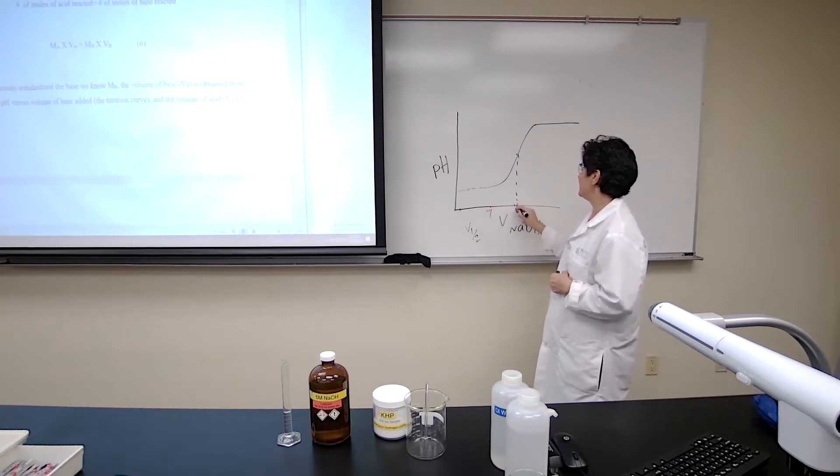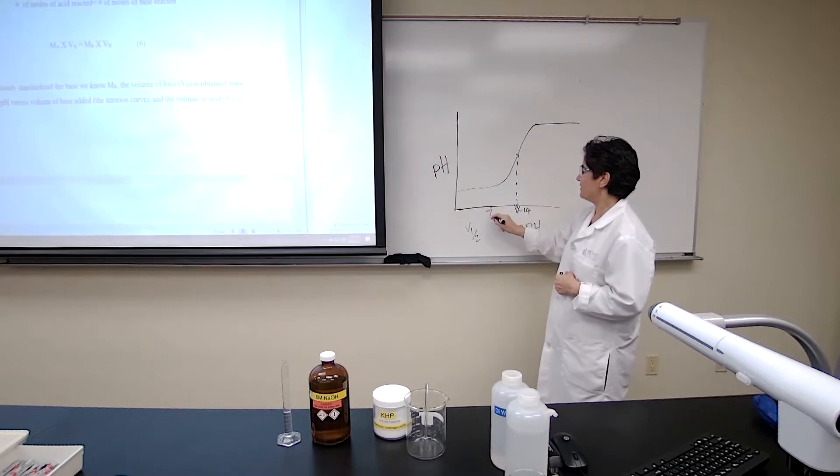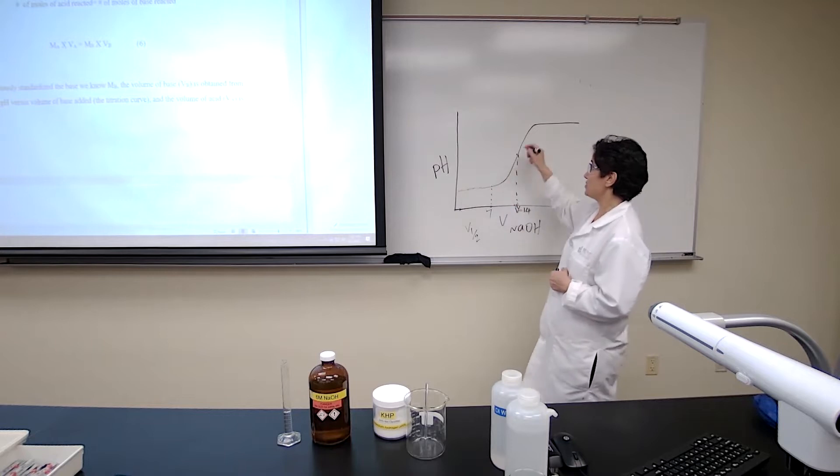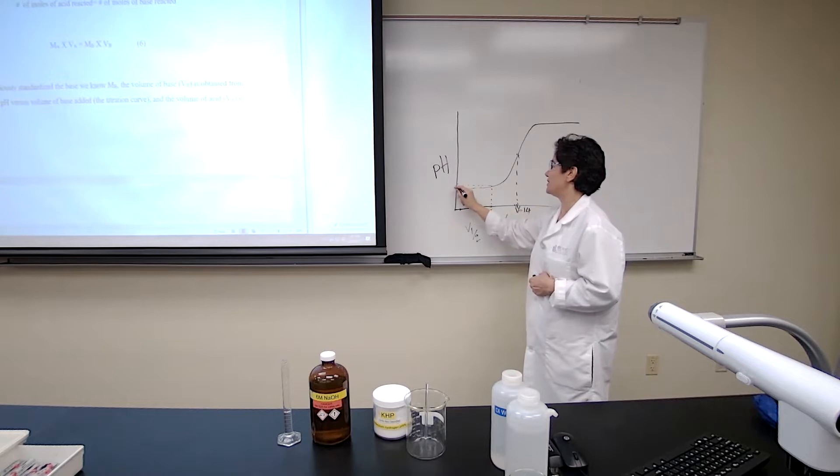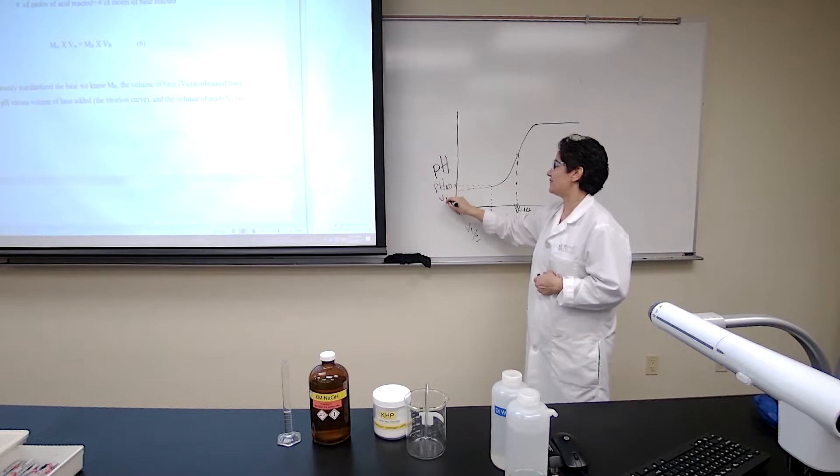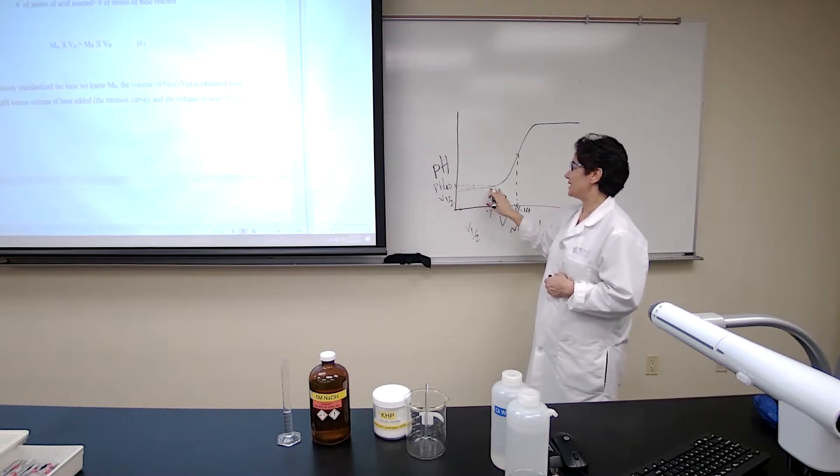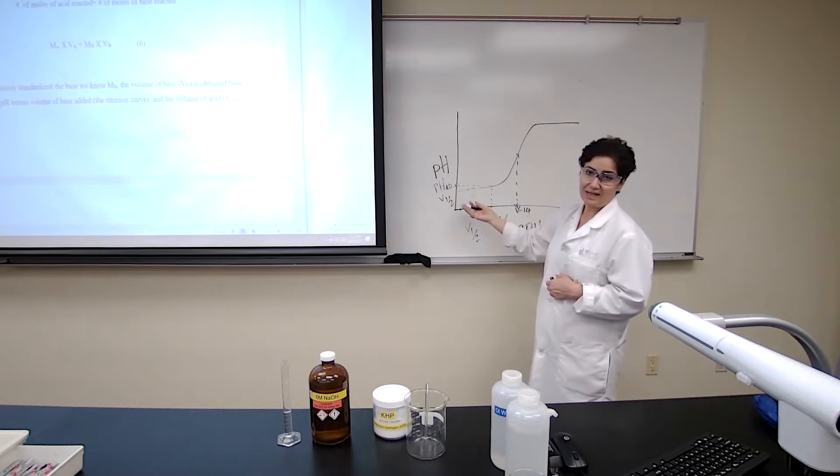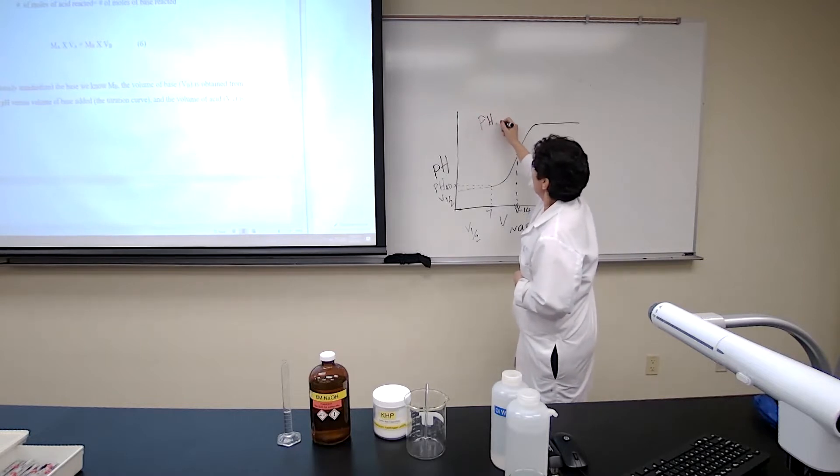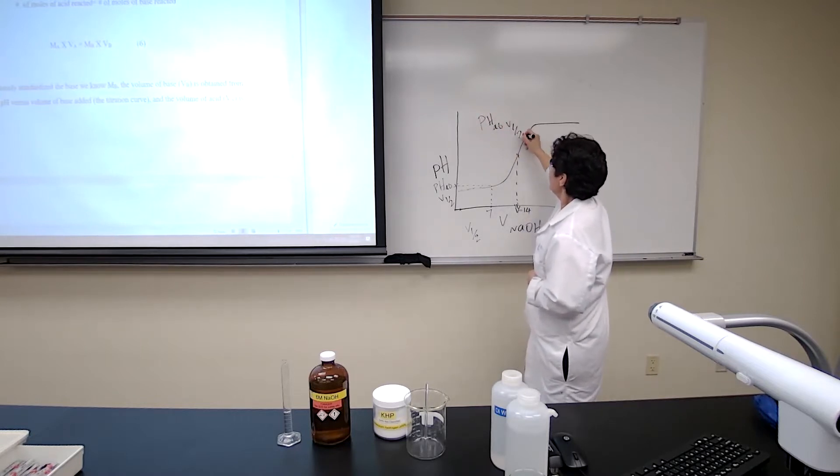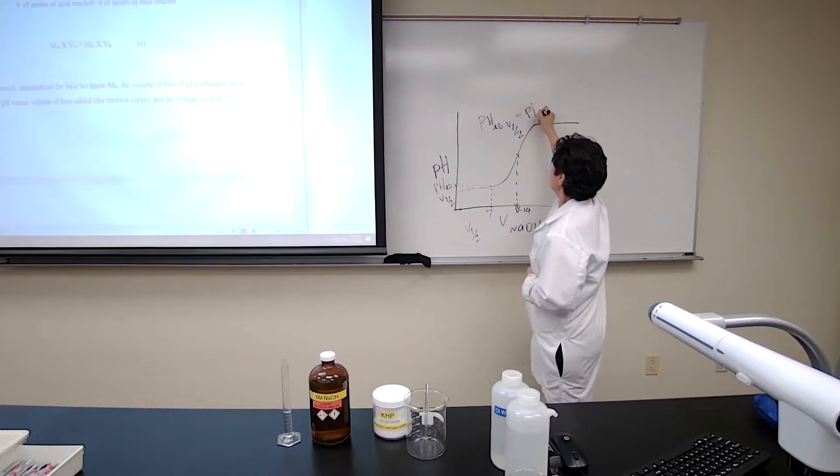So if the 14 is here and then mark 7, draw a line to the curve line to cross the pH curve and then from that point find the value for pH. So this would be the pH and we have that equals Ka value. So we have pKa, I'm sorry, the pH at half volume equals pKa.